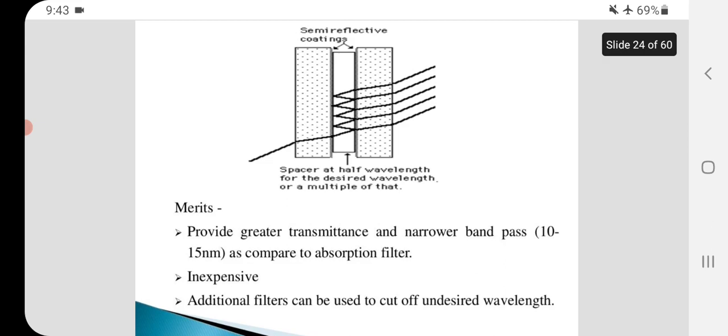These filters have a band pass of 10-15 nanometer with peak transmittance of 40-60%. These are the diagrams of semi-reflective coatings. Merits provide greater transmittance and narrower band pass compared to absorption filter, inexpensive. Additional filters can be used to cut off undesired wavelength.